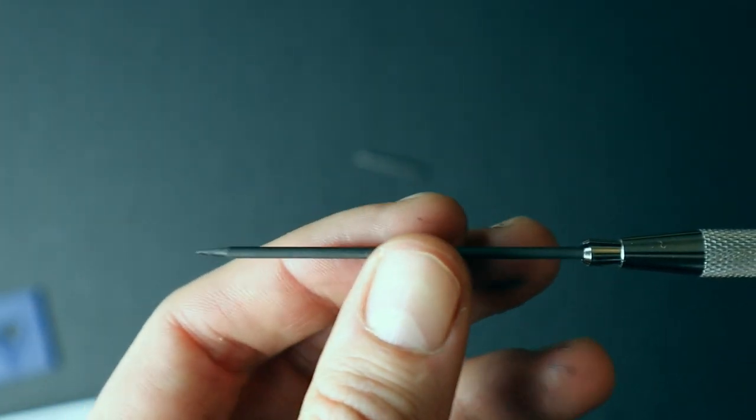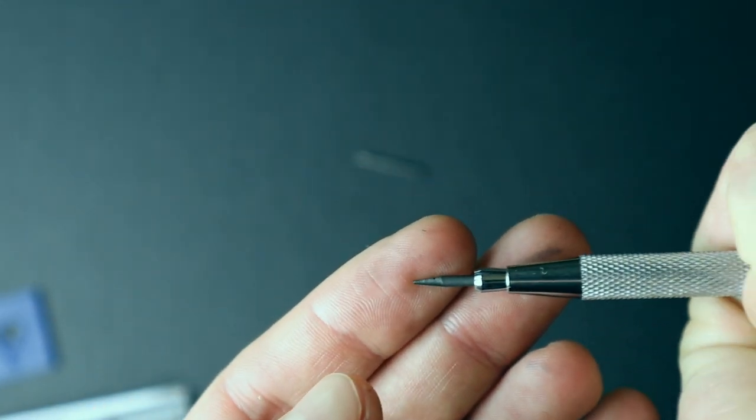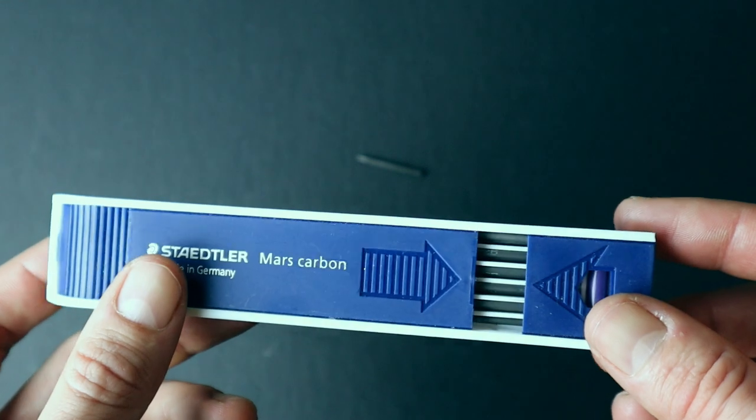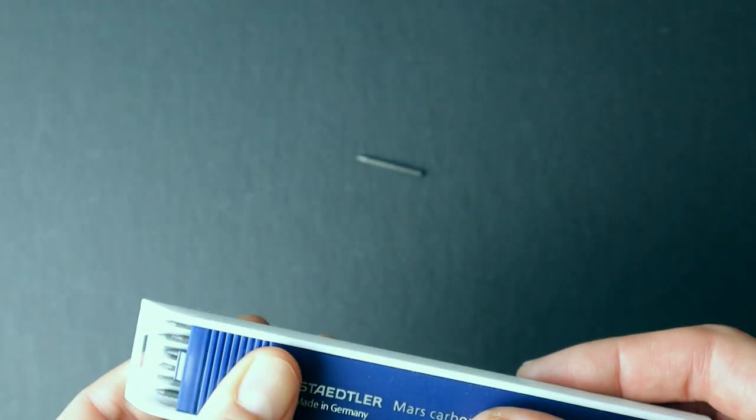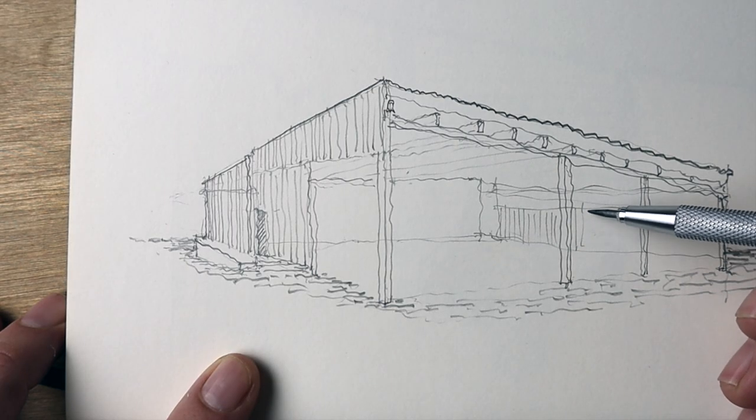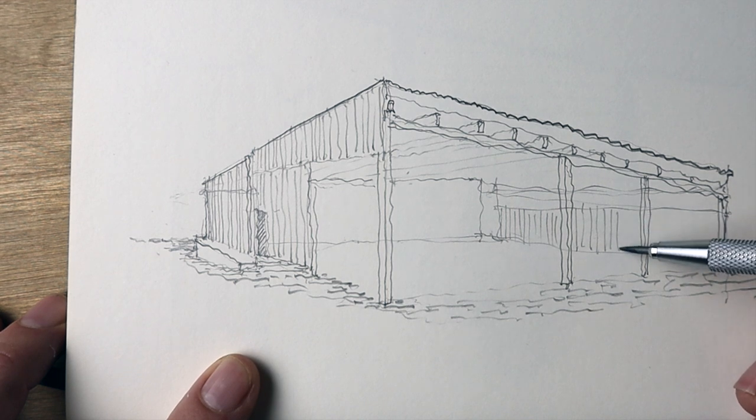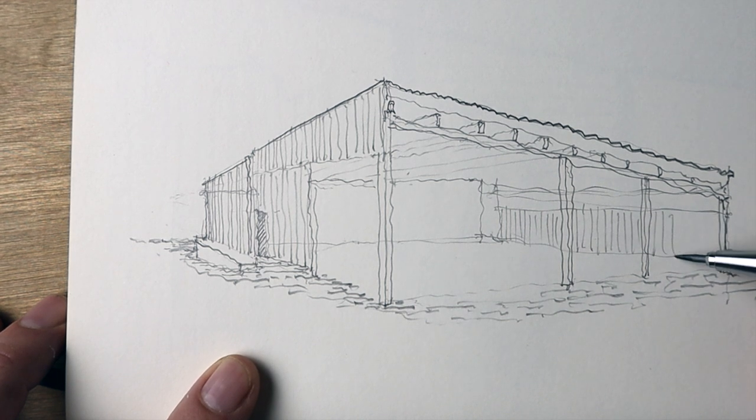I've been using mine with these 2mm 2B Leads from Staedtler, and this dispenser comes with a pack of 12 leads. I just love the feel of this pencil in my hand. I'm not sure if it's the weight or the grip, but I think this one's going to be hard to replace.